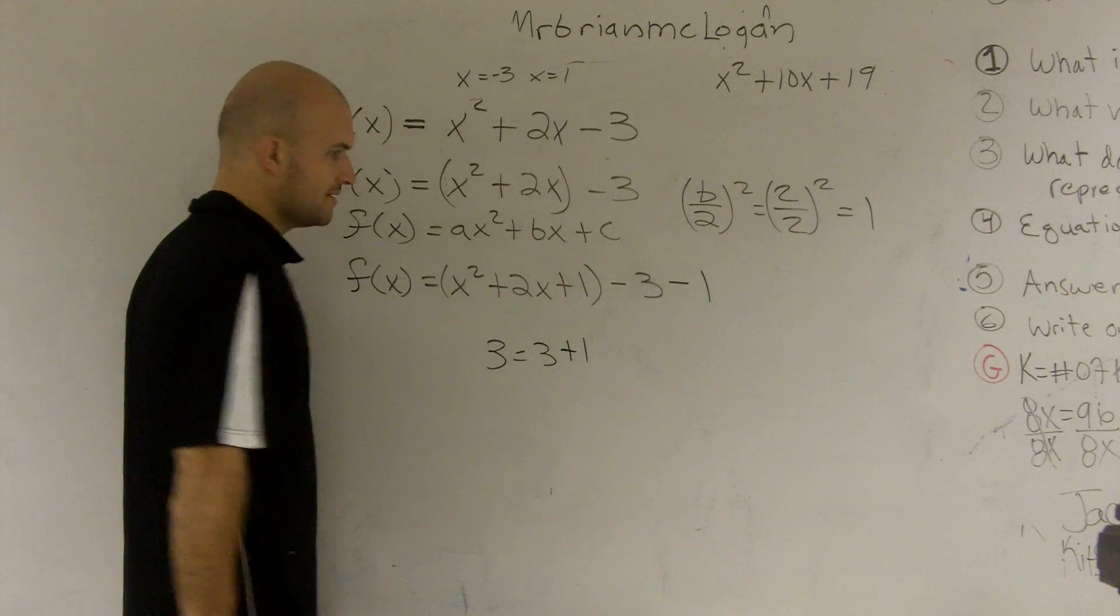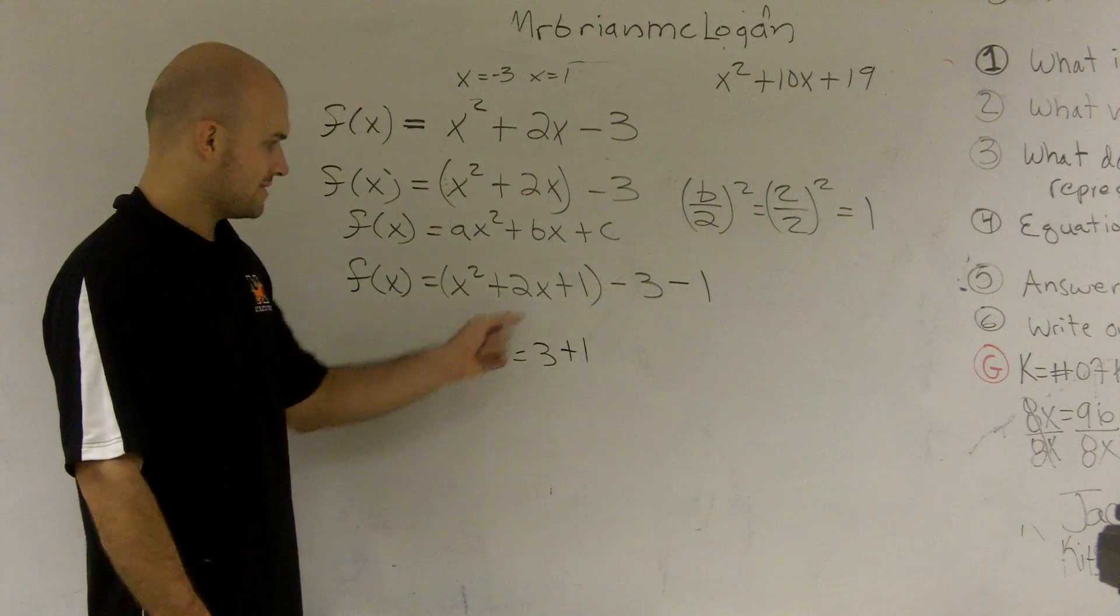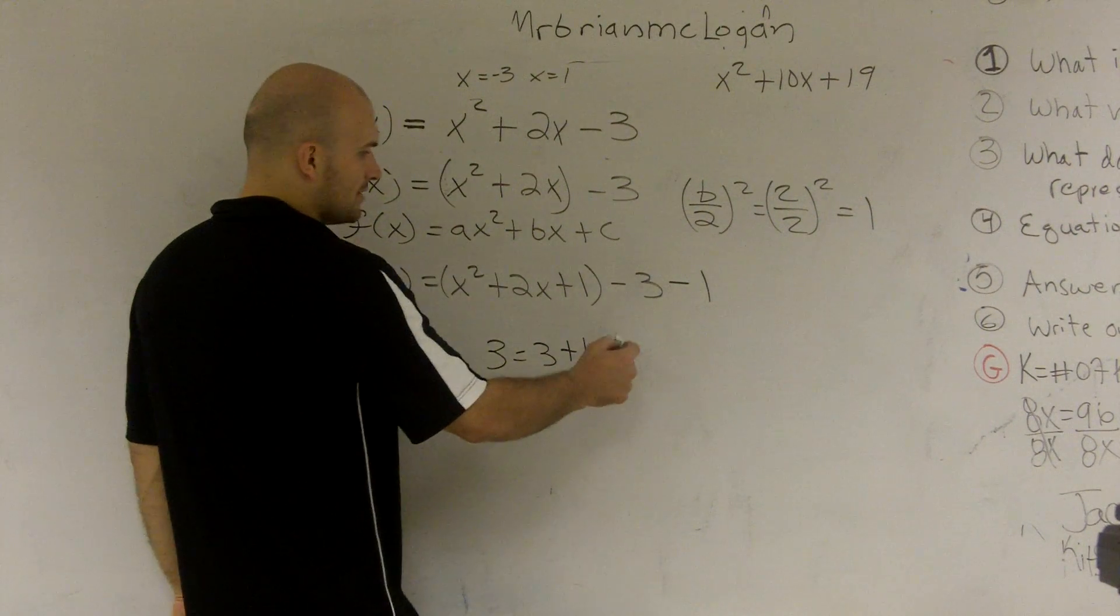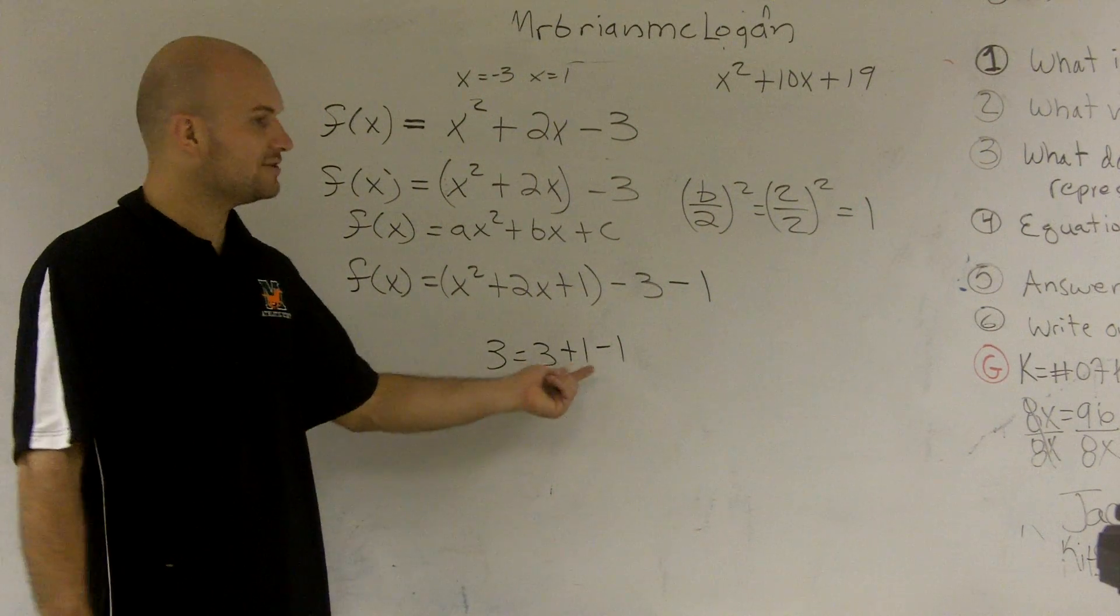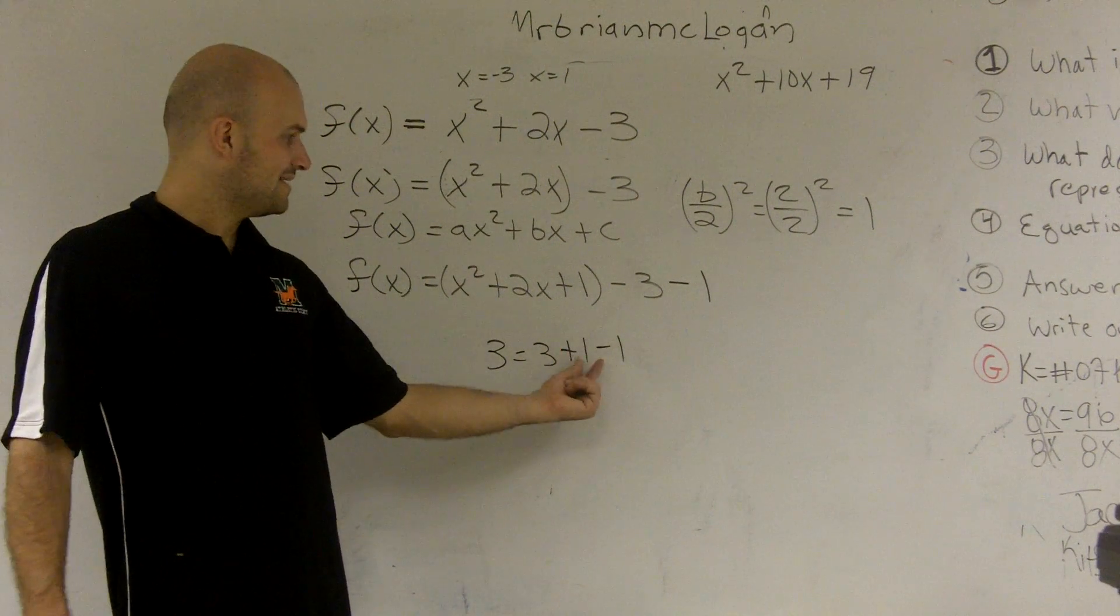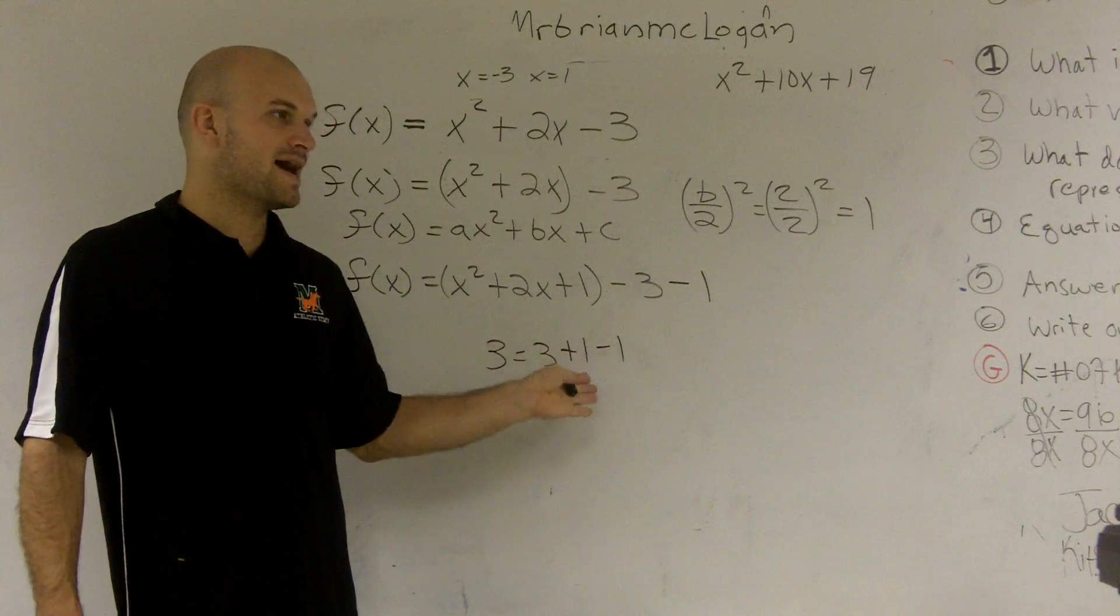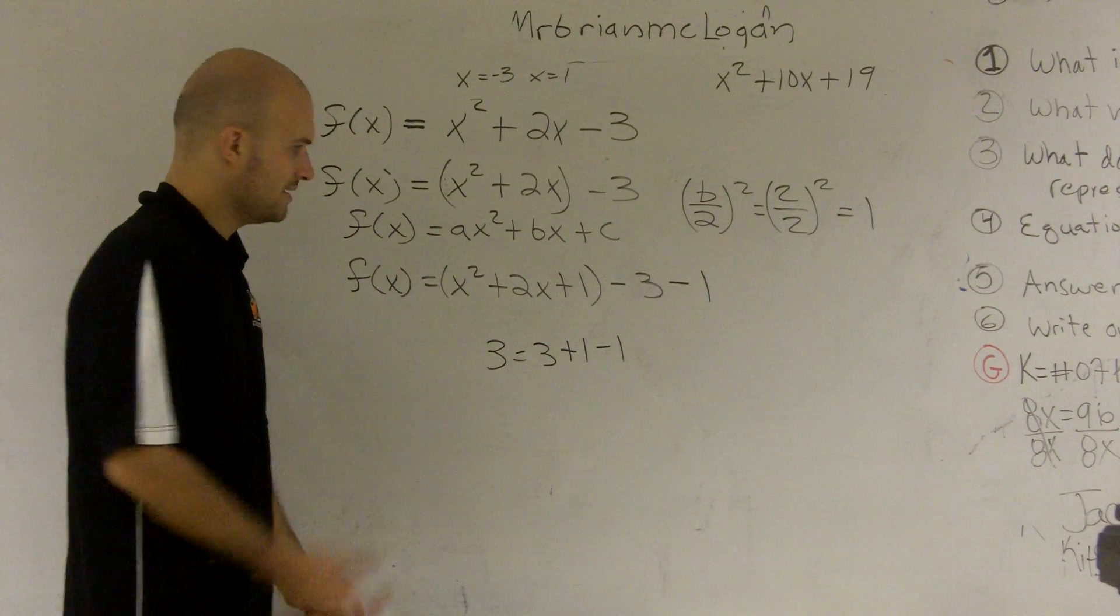But if you add a 1 to this side, now that's not true anymore, right? Now 3 is equal to 4. So if I'm going to add a 1, I also have to subtract the 1. Now, why would we do that? We wouldn't. But you need to show that this is why it makes sense. You can't just add and expect things still to be true. Add and subtract.